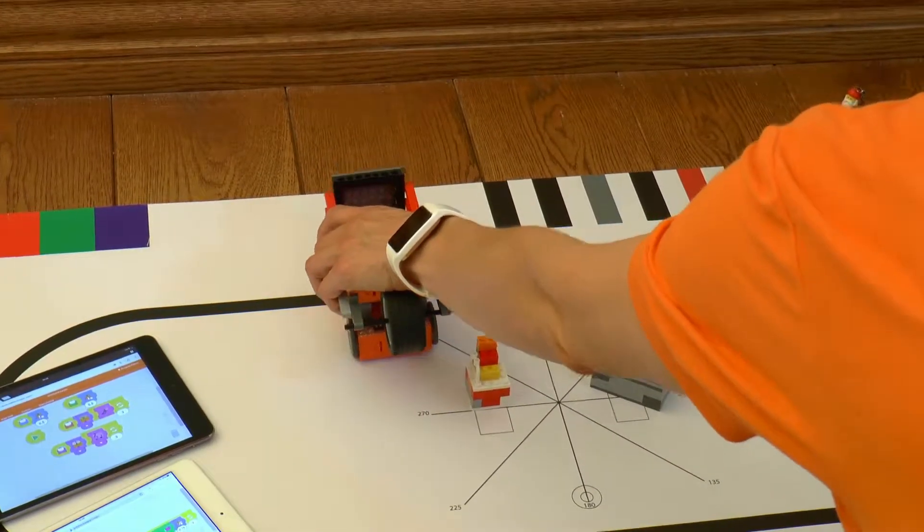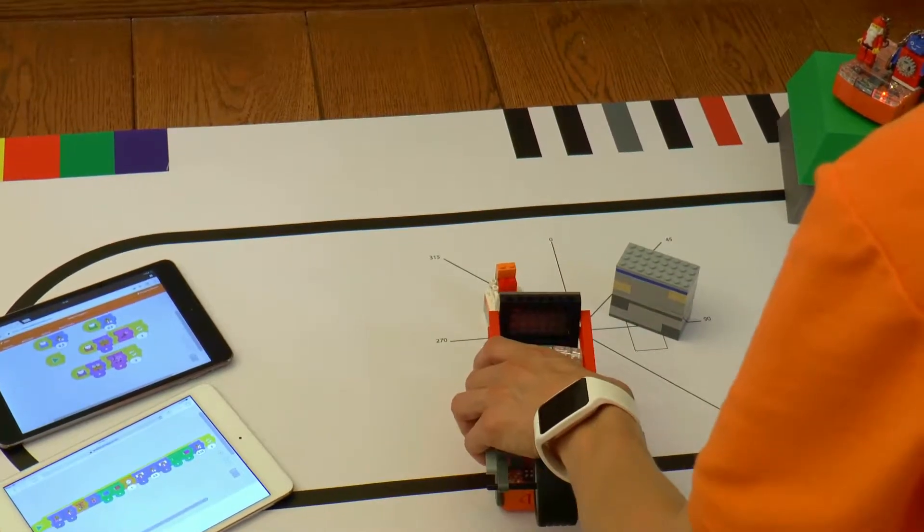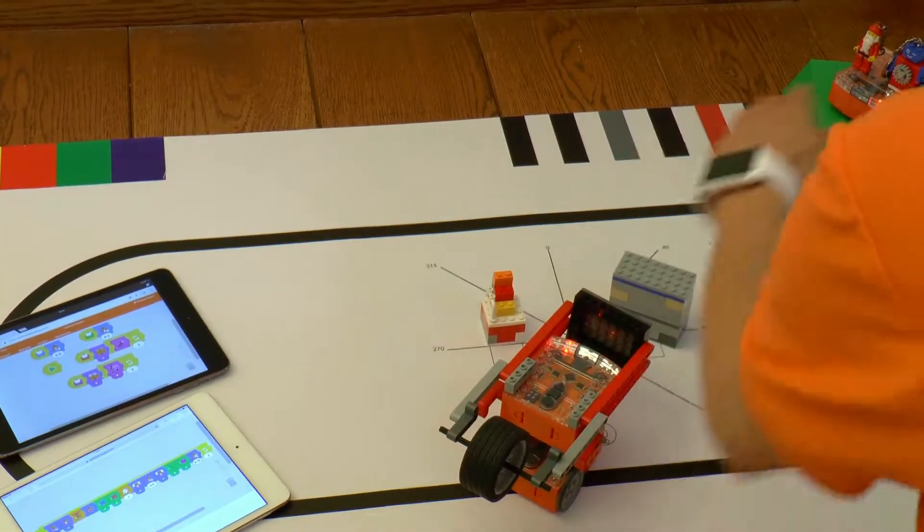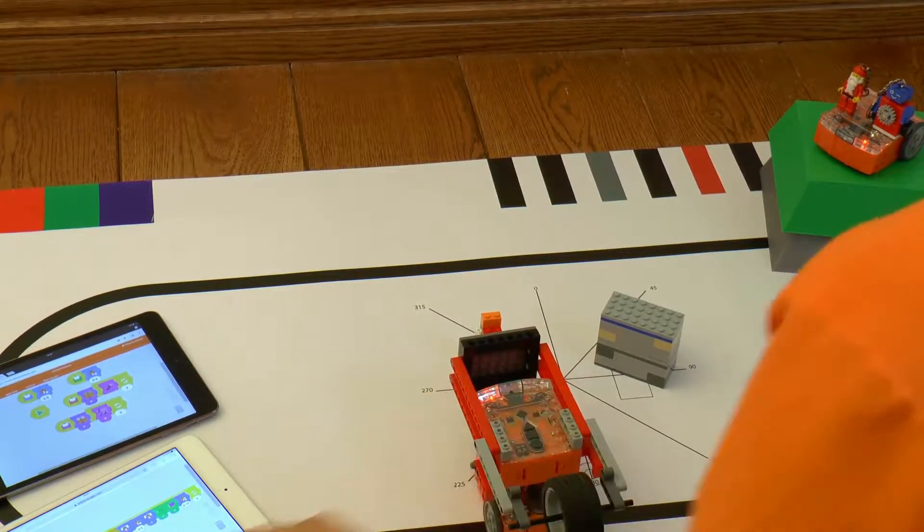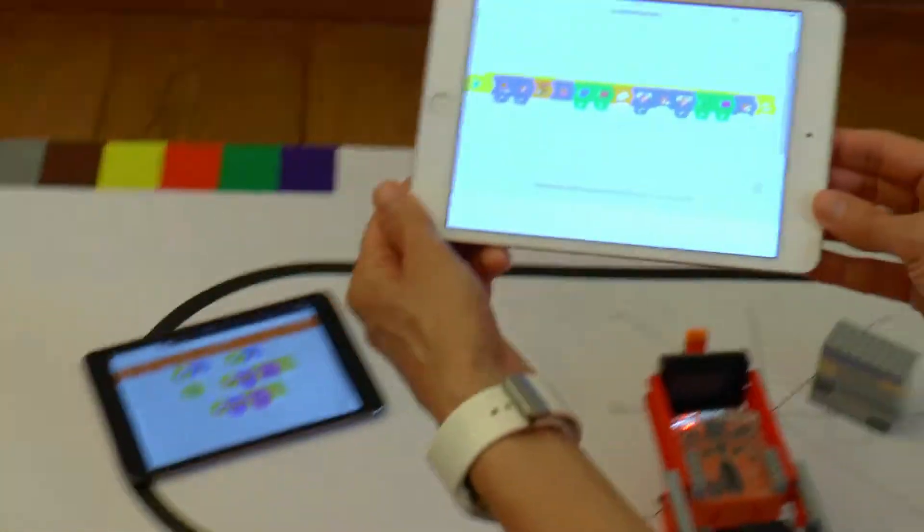After that the robot will drive forward until reaching a black line, drive backward, lift the plow up, turn off the safety light and go searching for a new obstacle. For the main robot I made this program.